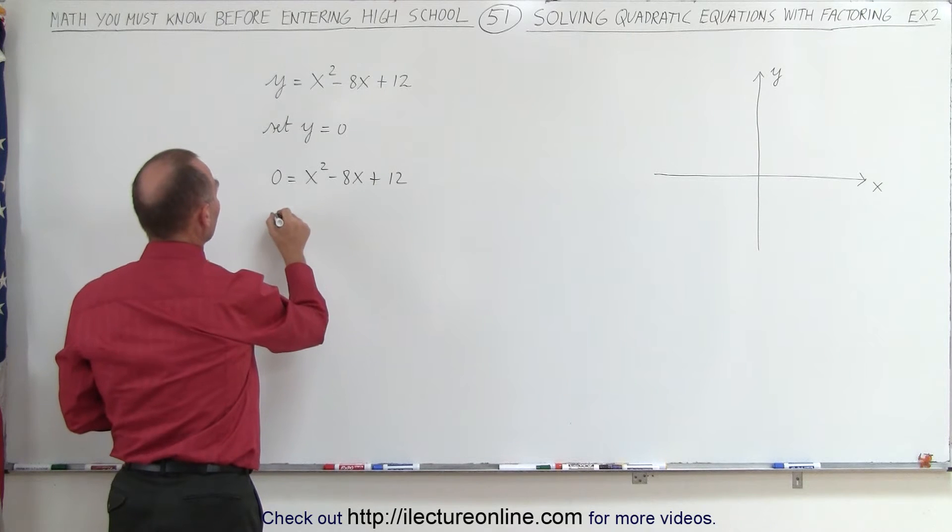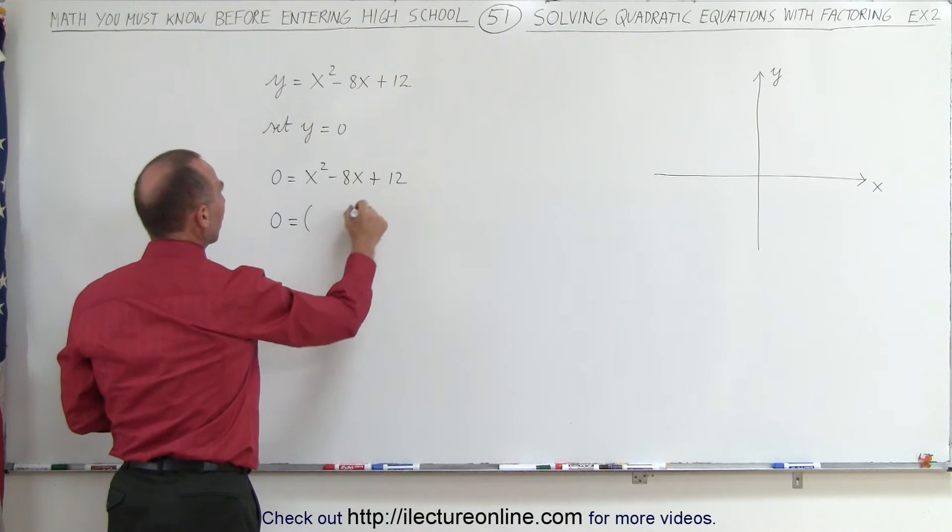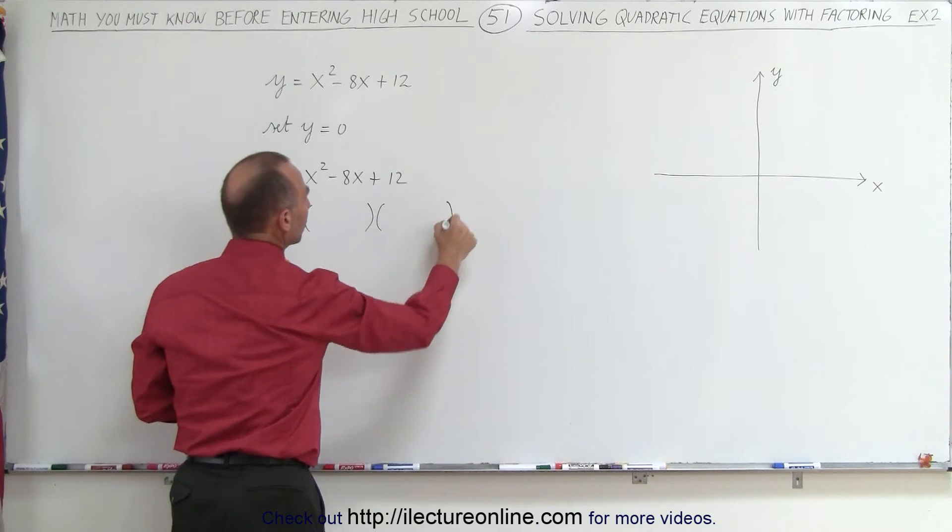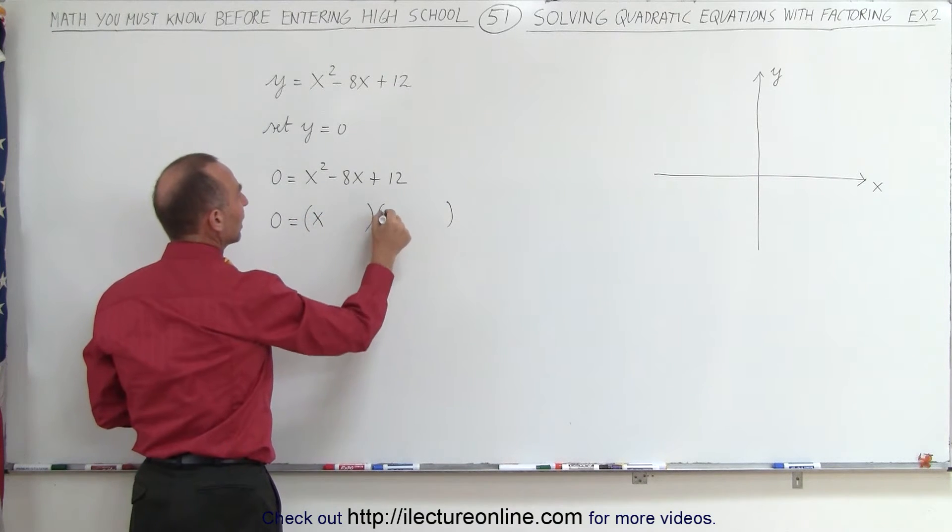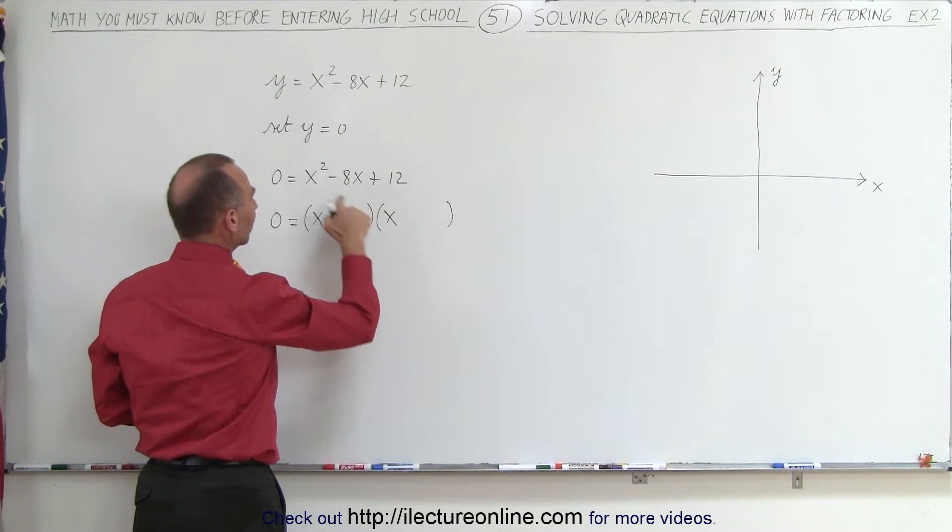So, we're going to factor the right side. 0 is then going to be equal to the product of two binomials. So, first, to get the x squared, we need an x here, and we need an x there, because x times x gives us an x squared.